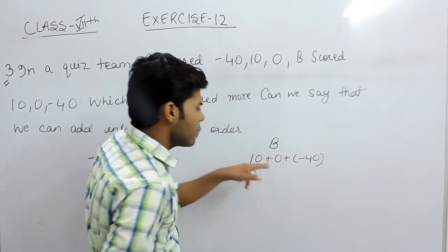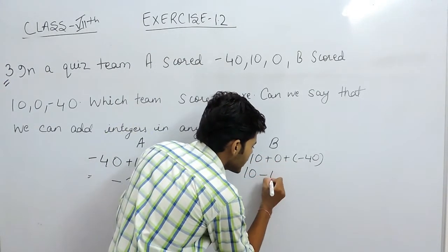Now here it will be 10, 0 can be neglected, plus minus is minus, so 10 minus 40.